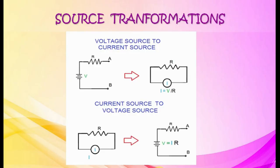Source transformations. To transform a voltage source to a current source, the value of current equals source voltage by its resistance, and connect resistance in parallel to that current source. To transform a current source to a voltage source, the value of voltage equals source current times its resistance, and connect resistance in series to that voltage source.